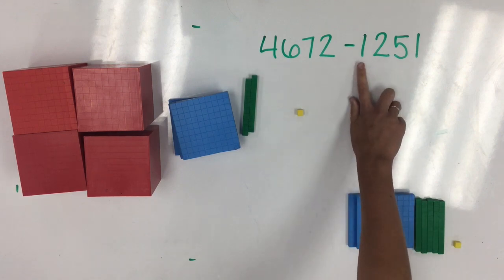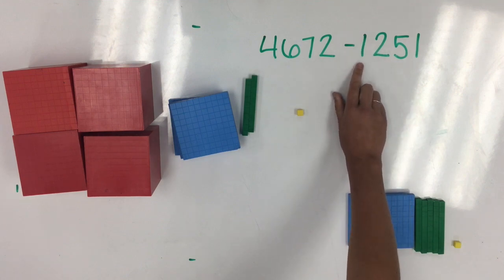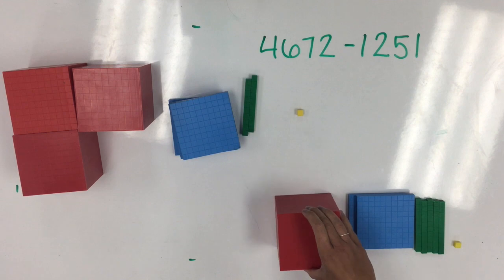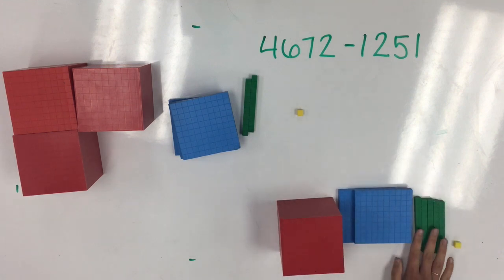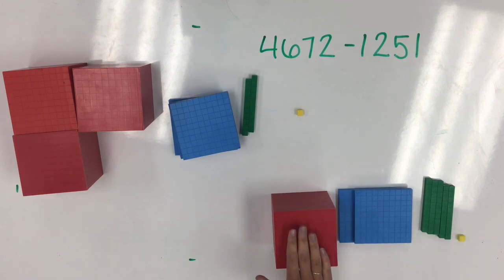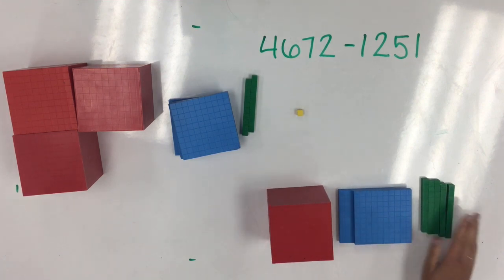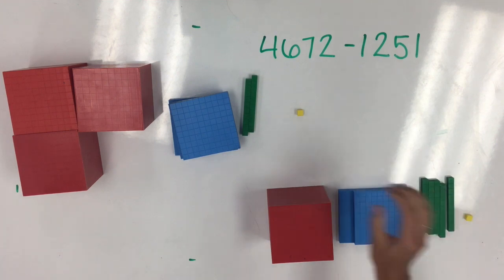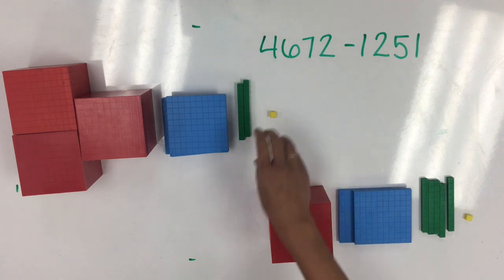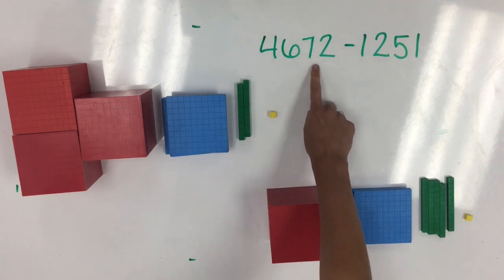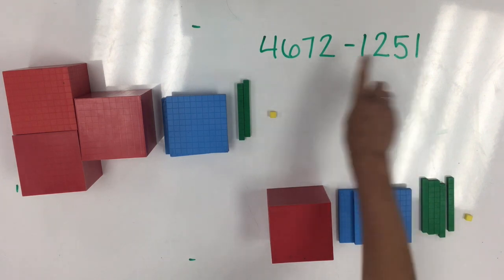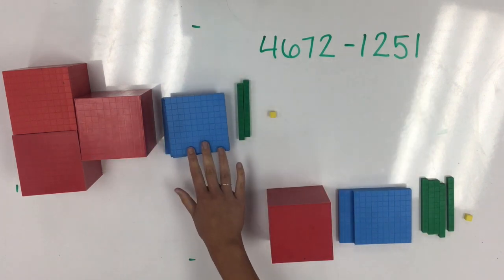Finally, we move to the thousands place. I want to take away 1,000 from my starting number. If I look back at my work, I can tell that I have taken away 1,251. Therefore, the number I have left here is my answer. 4,672 minus 1,251 is 3,421.